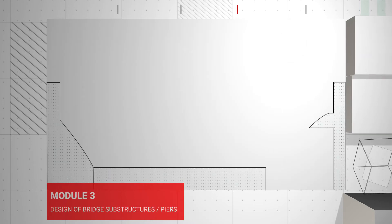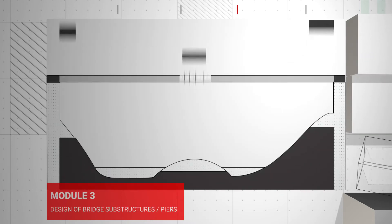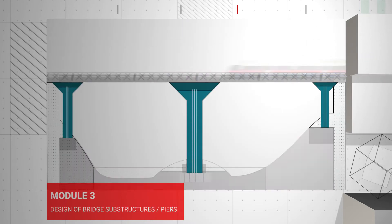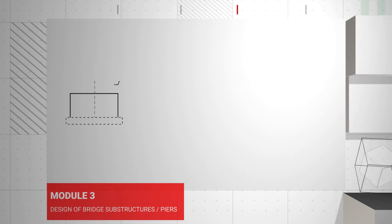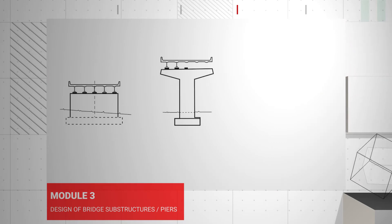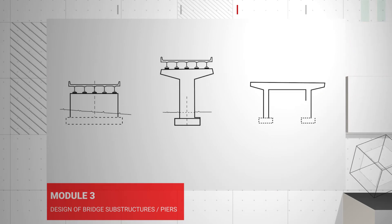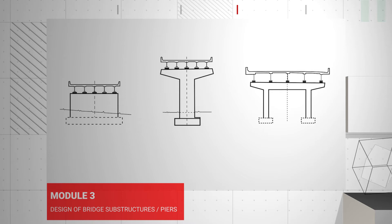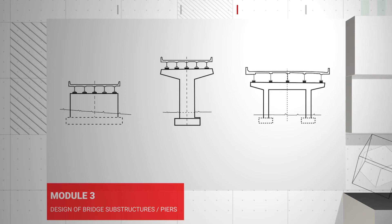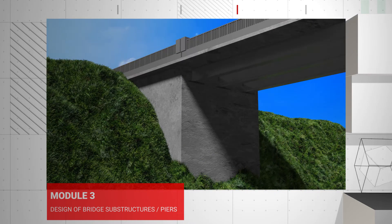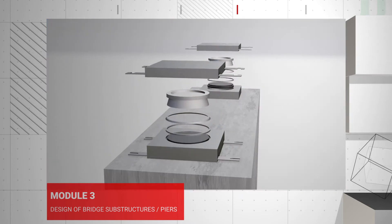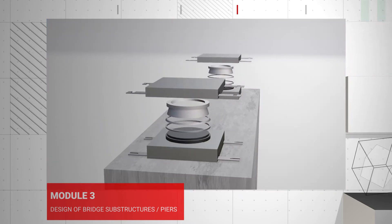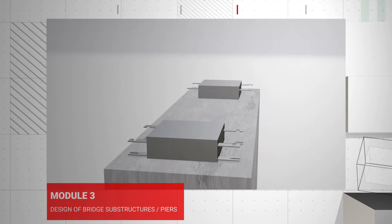In Module 3, you will learn about the substructure of bridges which supports the superstructure. This includes types of bearings, calculation of loads on the bearings and substructures, and the design and analysis of substructures like the pier cap, pier, abutments, and retaining walls.